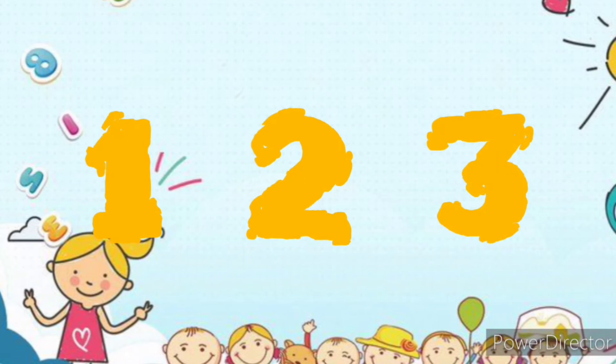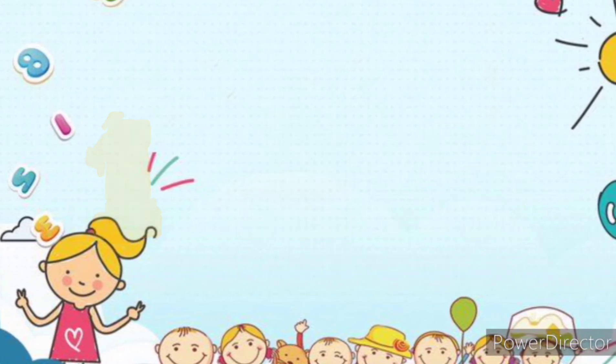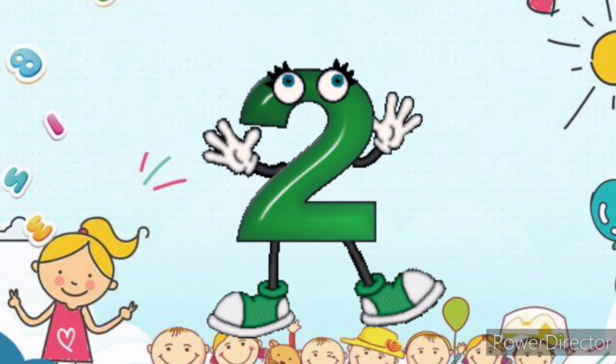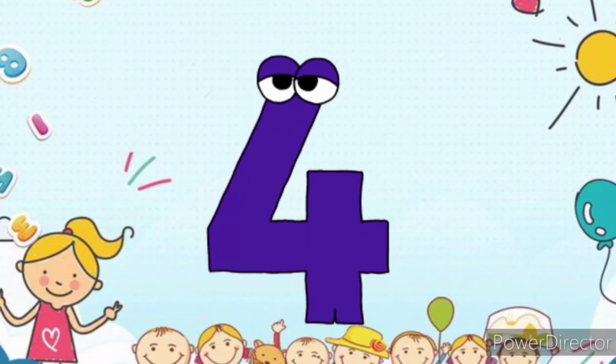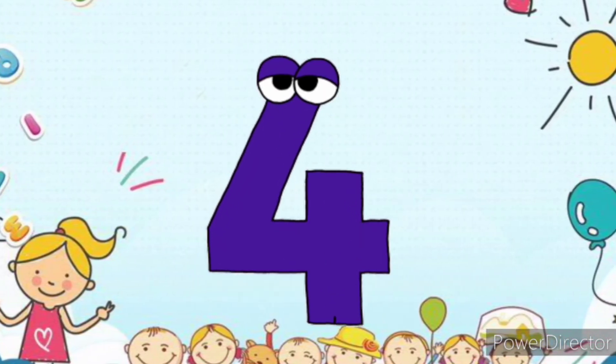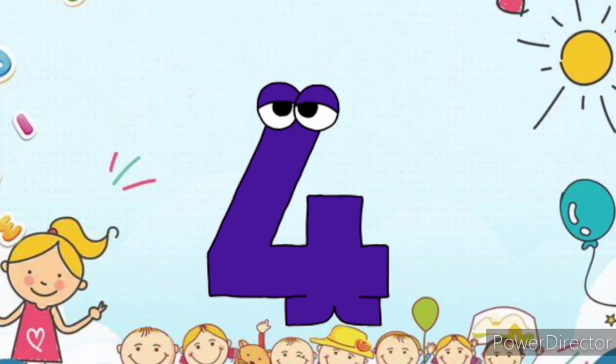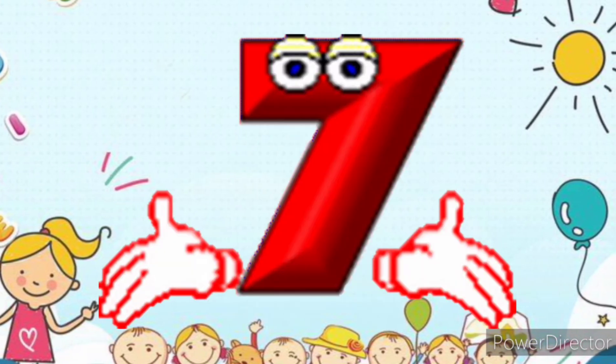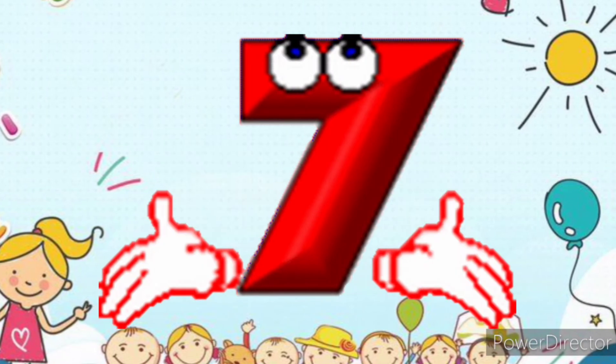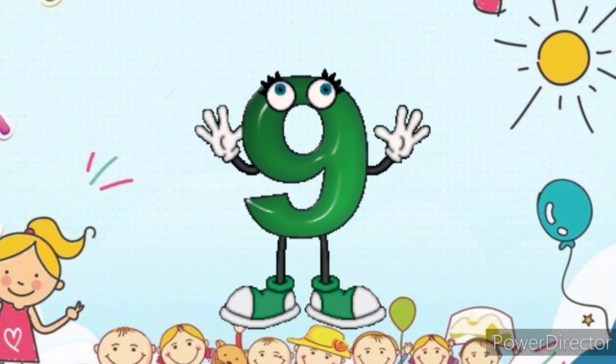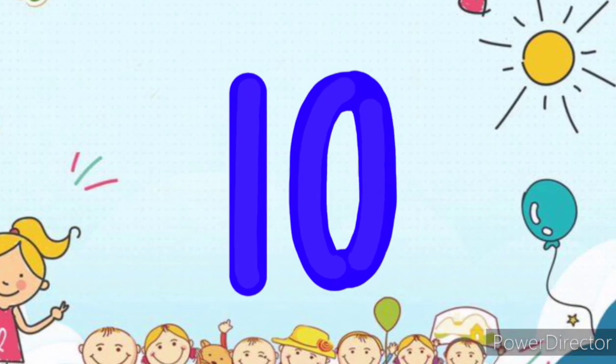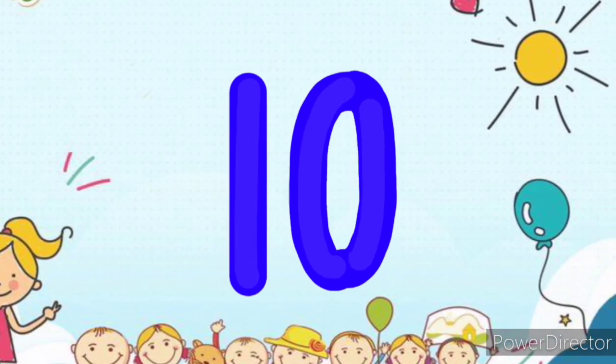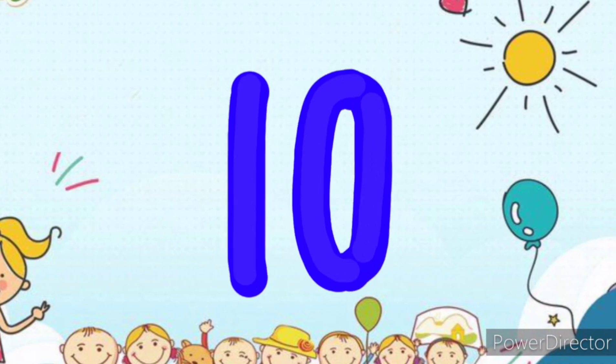1, 2, 3, Jesus loves me. 1, 2, Jesus loves you. 3 and 4 loves you more. More than you've ever been loved before. 5, 6, 7, 11, 11. 8, 9, is love is divine. Now when we sunrise up to 10, we won't have time to sing it again.